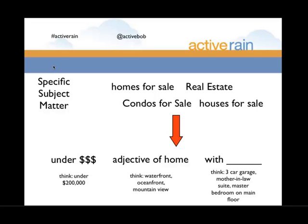How do we get more specific with subject matter as a real estate agent? Start with the broad terms — 'homes for sale,' 'condos for sale,' 'houses for sale' — the big head terms. Then think about qualifiers someone might add. One way is price ranges. In markets like Las Vegas or Phoenix, you see searches like 'condos for sale in Las Vegas under a hundred thousand dollars' or 'condos for sale in Las Vegas under seventy-five thousand' — often investors doing this kind of search.